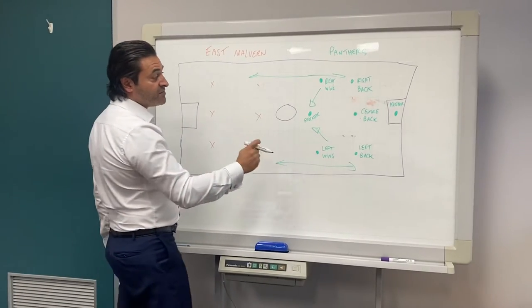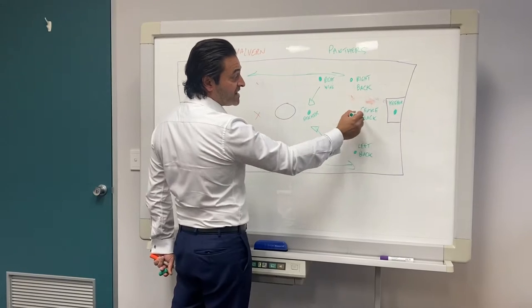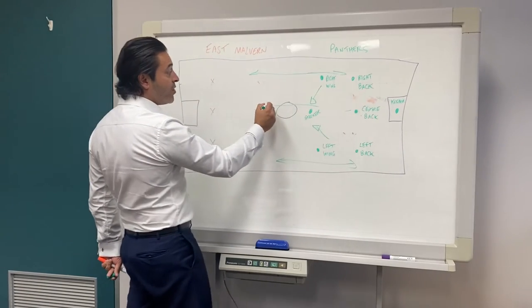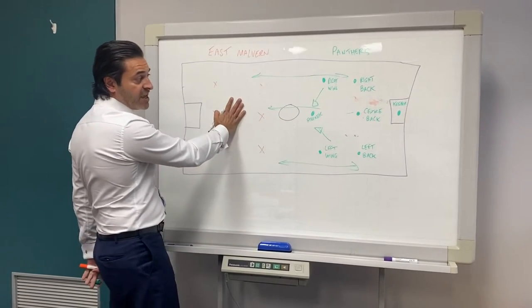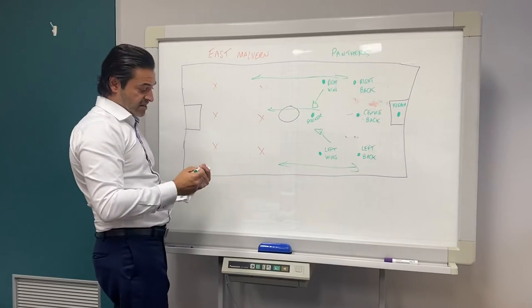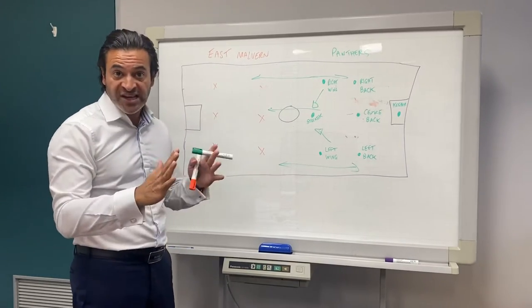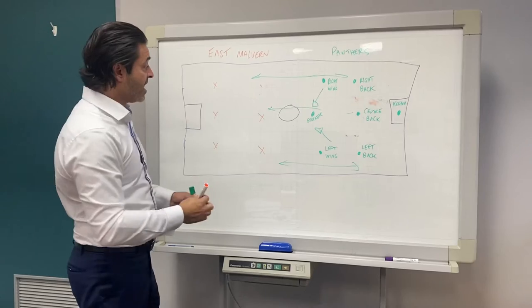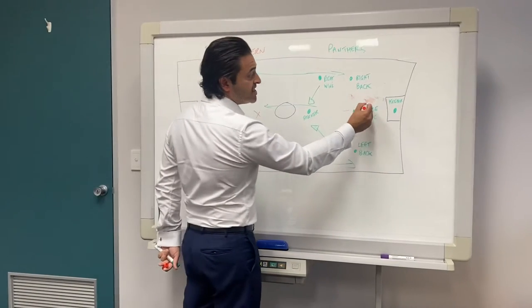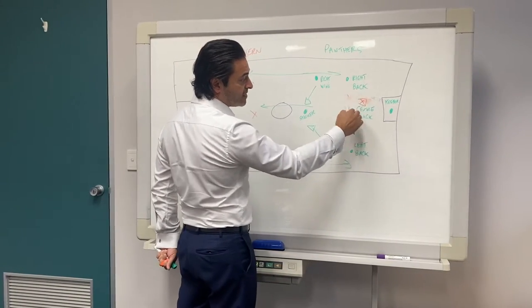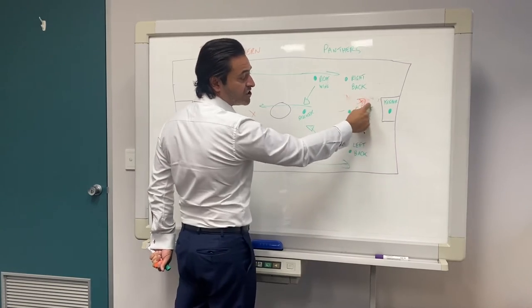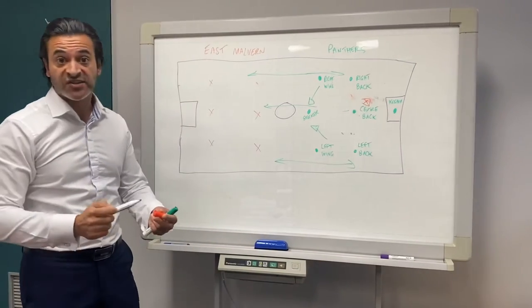Now that doesn't mean the center-back stays there all the time. He can push up all the way over here if the game's over here, but the center-back always has to be looking behind them. An opposition player should never be behind the center-back. The center-back has to move back to make sure he's always the last man.